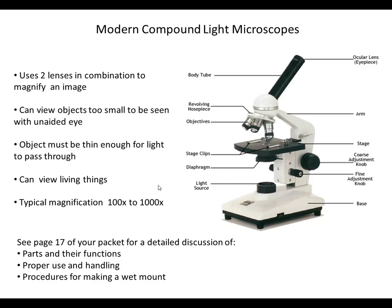A stereoscope, which we'll use later in the unit, allows us to look at three-dimensional features of larger or thicker objects. One nice thing about compound light microscopes is we can view living things — for example, a sample of pond water could reveal microorganisms called protists, like the amoeba or paramecium. Typical magnification ranges from 100 to 1000 times. In class, our microscopes offer 40x on scanning, 100x on low power, and 400x on high power.